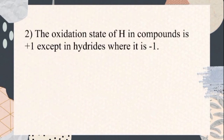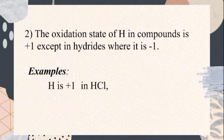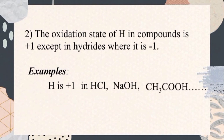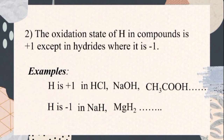Rule number two: the oxidation state of hydrogen in compounds is positive one, except in hydrides where it is negative one. For example, hydrogen is positive one in hydrogen chloride, positive one in sodium hydroxide, and positive one in acetic acid, while hydrogen is negative one in sodium hydride, magnesium hydride, and all other types of hydrides.